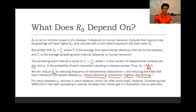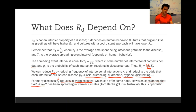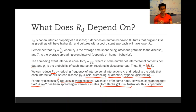Now, a final note: for many diseases the probability of spreading reduces in warm seasons, which offers some hope. But considering that this disease has been spreading in warmer climates such as Singapore and Australia — for example, Tom Hanks got it in Australia — this is kind of optimistic. I wouldn't bet the barn on it.